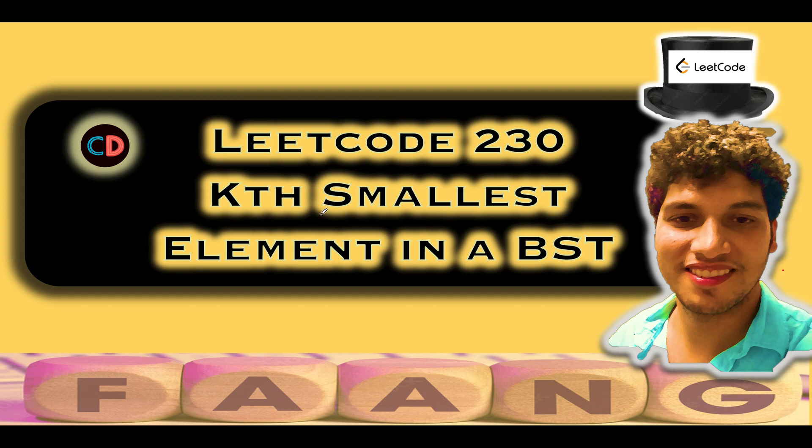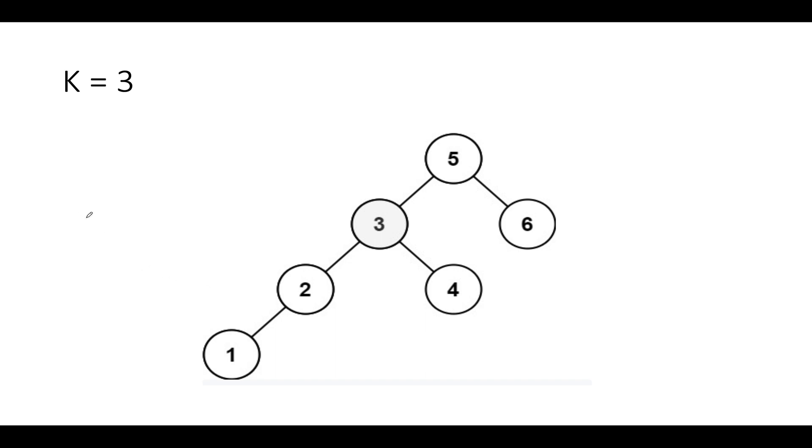LeetCode 230 kth smallest element in a binary search tree. It's a medium level question on LeetCode. If you have any doubt or want to ask anything, please feel free to ping on the telegram group or discord server of coding decoded. Both links are mentioned in the description below.